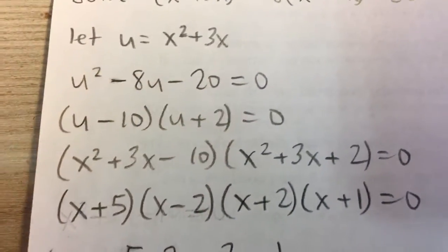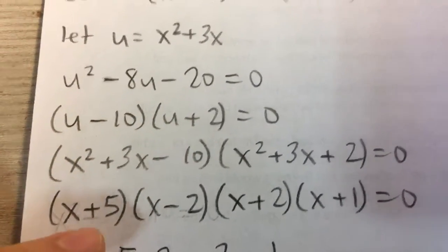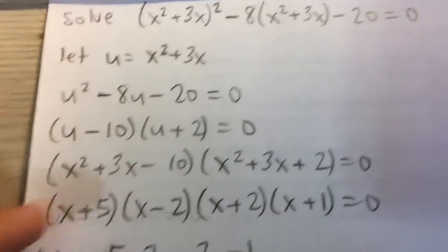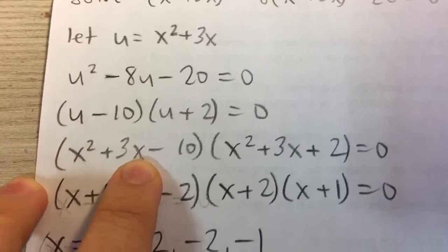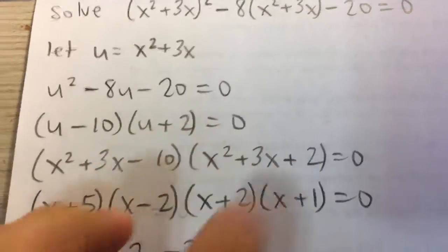We get (u-10)(u+2). Now we can plug back in for u and we'll get (x²+3x-10)(x²+3x+2) = 0.